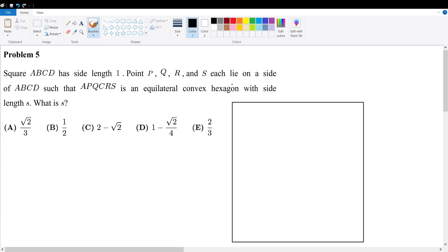Problem five. Square ABCD has side length of one. Points P, Q, R, S each lie on the side of ABCD such that APQCRS is an equilateral convex hexagon with side length S. What is S?